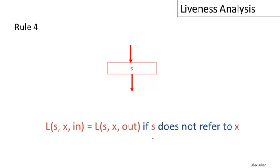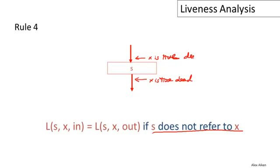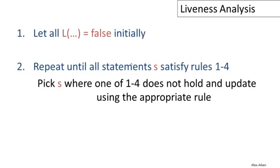The last case is when a statement does not refer to X at all — it neither reads nor writes X. Then whatever the liveness of X is after the statement, it has the same liveness before the statement. If X is live after, it will be live before; if X is dead after, it must be dead before, because the statement neither reads nor writes X. Those are the four rules. Initially, we let the liveness of X be false at all program points, and then we repeat until all statements satisfy the rules — picking statements where the information is inconsistent and updating with the appropriate rule.